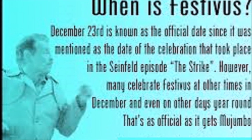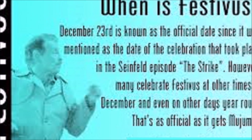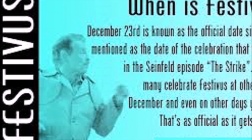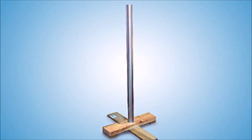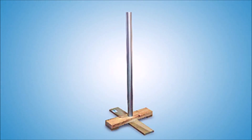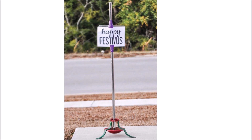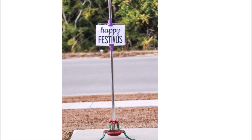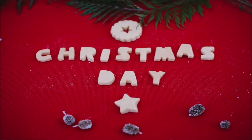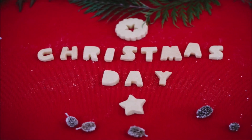Third is Festivus, which is on 23rd December. The Seinfeld episode 'The Strike' brought this festival into popular culture in 1997. The parody holiday is a small stand against Christmas consumerism, and instead of a decorated tree, it features a decorative aluminum pole.